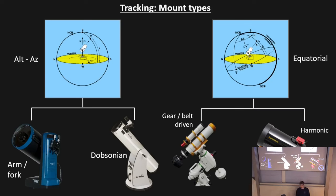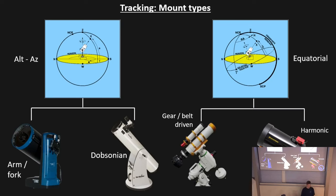Equatorial mounts fix this by being tilted at an angle equal to your latitude — here in the UK that's about 54 degrees. With the mount properly aligned, it can track an object without field rotation and take long exposures through the night. There are two types of equatorial mount: gear or belt driven, and the newer harmonic drive mounts which use a strain wave system. Harmonic mounts are much lighter and more portable, though the mount head alone is about 10 kilograms, which I definitely feel when lugging it to campus.